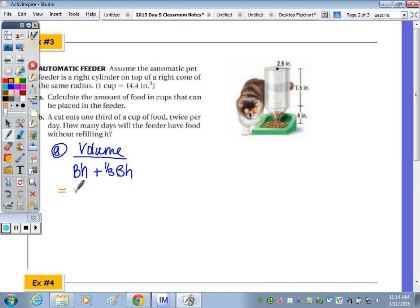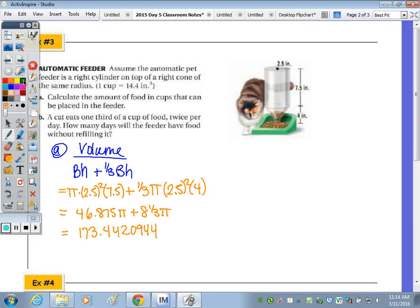For the composite solid, we're going to look at the volume of the cylinder, whose formula is capital B times h, and the cone, whose formula is one third capital B times h. Substituting in the area of the base, which is a circle, is pi r squared. So we have pi times 2.5 squared times the height, and then for the cone, it's going to be one third pi times 2.5 squared times 4, the height of the cone. So that simplifies to 46.875 pi plus eight and one third pi. Typing that into the calculator, we get 173.4420944.